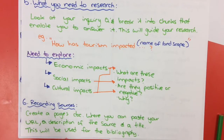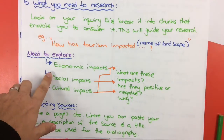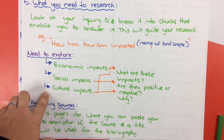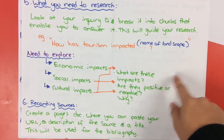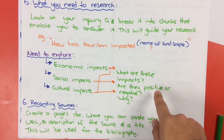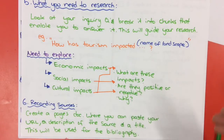On the section on the impacts of tourism, I'd create this inquiry question using 'how': how has tourism impacted - insert the name of your landscape there. Within that inquiry question, you'll need to explore the economic, social and cultural impacts. To do that, you would look at what the impacts are - are they positive or are they negative and perhaps why? And that will help guide what you need to research and also what you need to talk about.